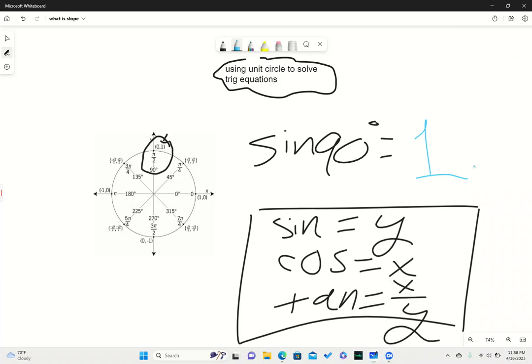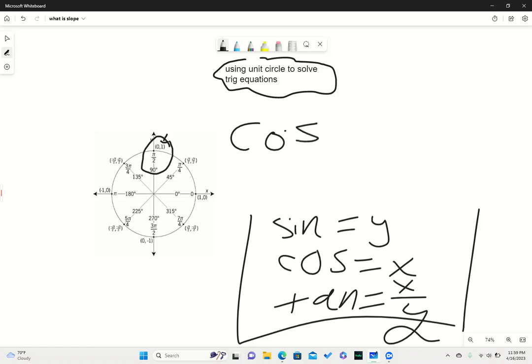Now if we do another example, for example, what is the cosine of 45 degrees? Well, you'd find 45 degrees on your unit circle. I like to circle it personally. And you'd look at the x coordinate.